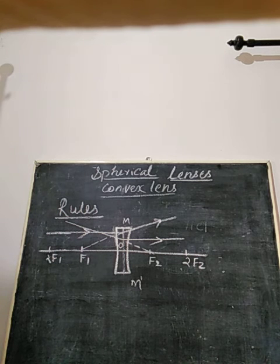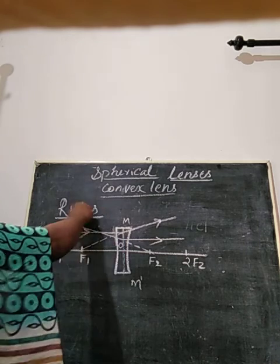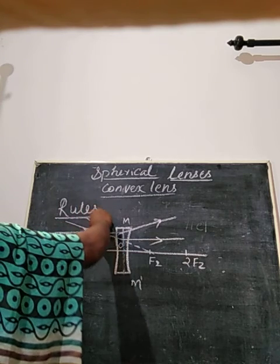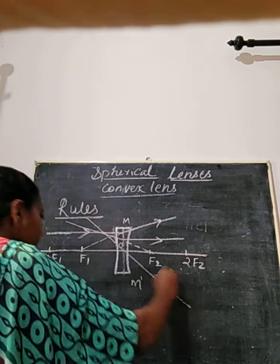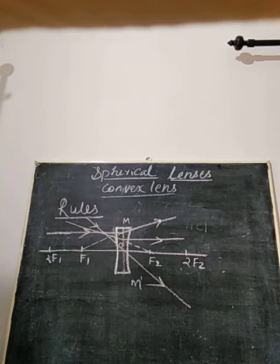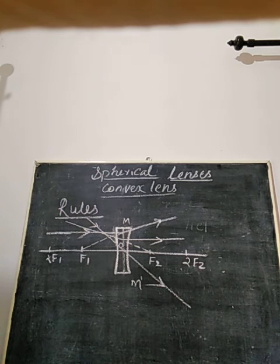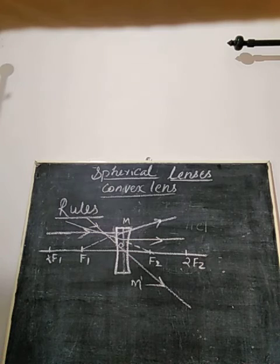The third rule is the same as in the case of a convex lens: a ray of light passing through the optical center of the concave lens passes with no deviation. That ray will move along the same path through the optical center without any deviation. This is the third rule of image formation by a concave lens.